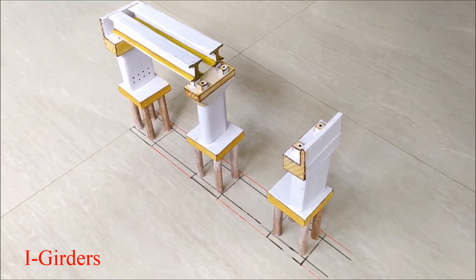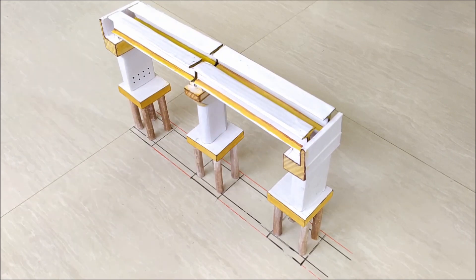These are I-girders, which are the main superstructure components of a girder bridge. The secrets behind the strength of I and box girders we have already discussed in the previous video. The link is in the description below.